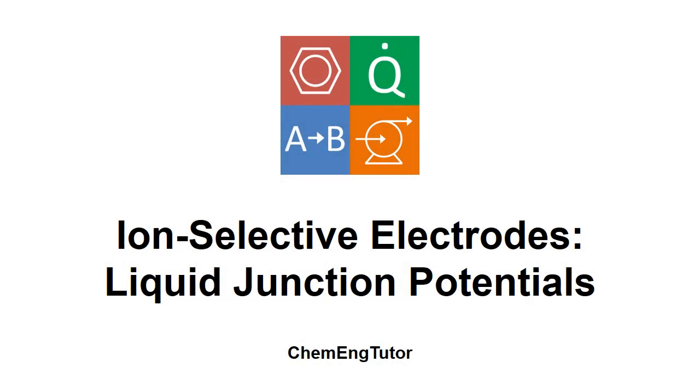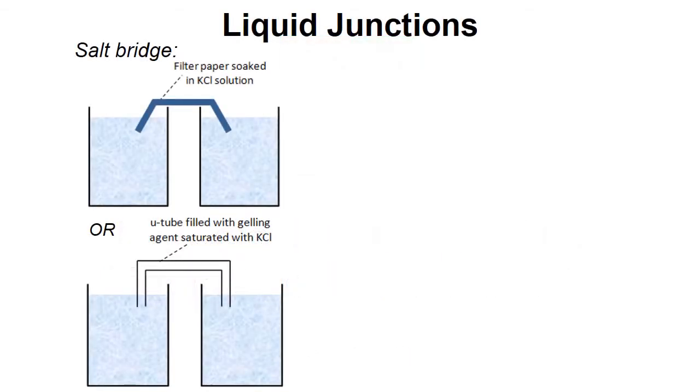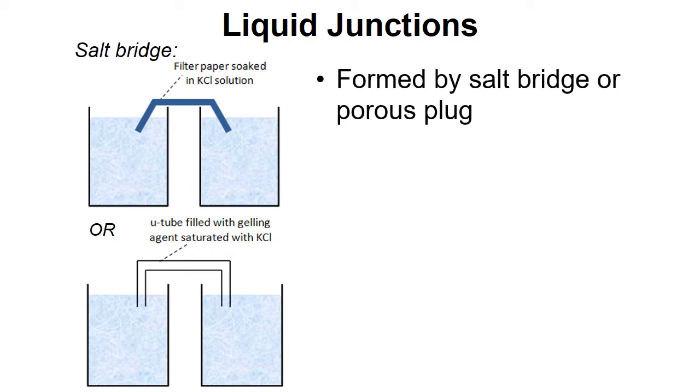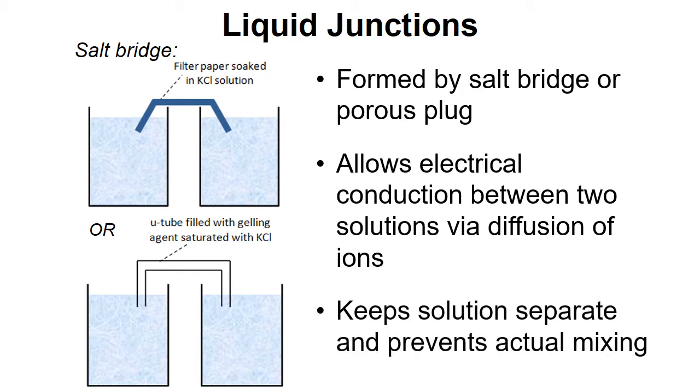In this video we're going to examine the origin of liquid junction potentials. First, a bit of background on liquid junctions. They are formed by either a salt bridge or a porous plug and allow the conduction of electricity between two solutions via the diffusion of ions, but they keep the two solutions separate and prevent them from actually mixing.